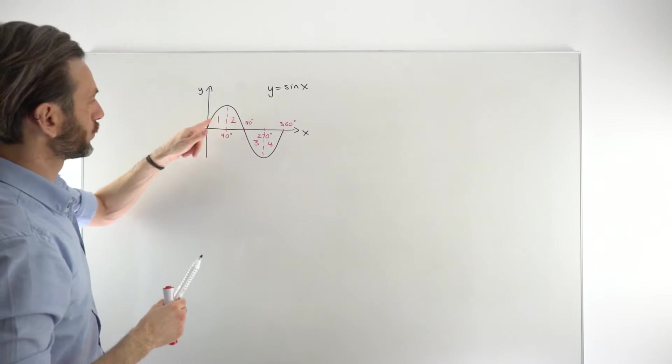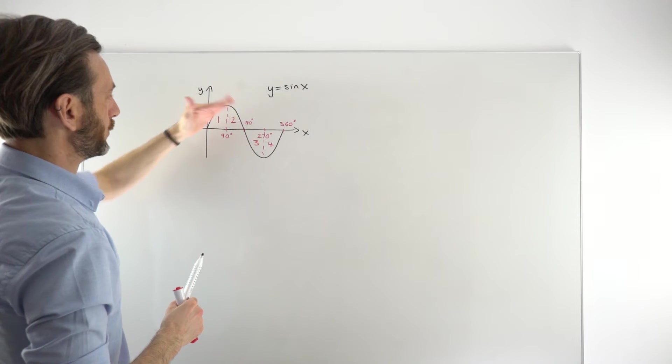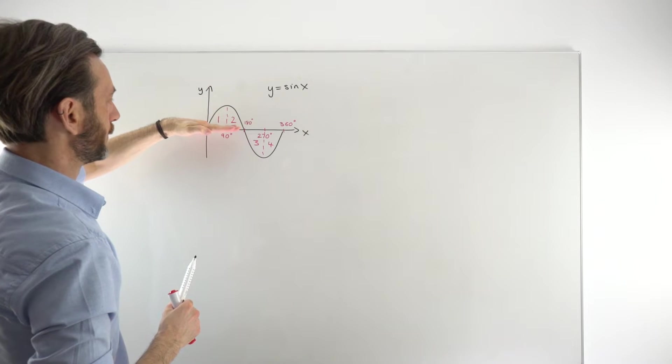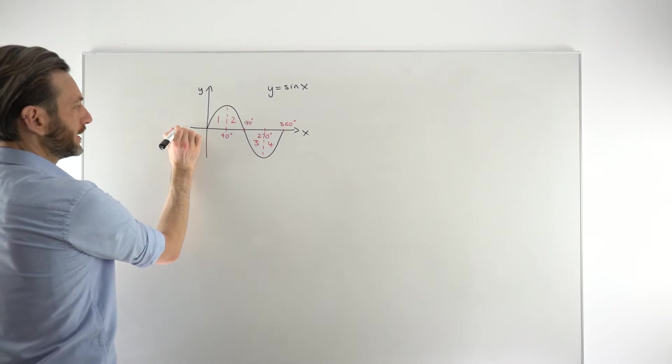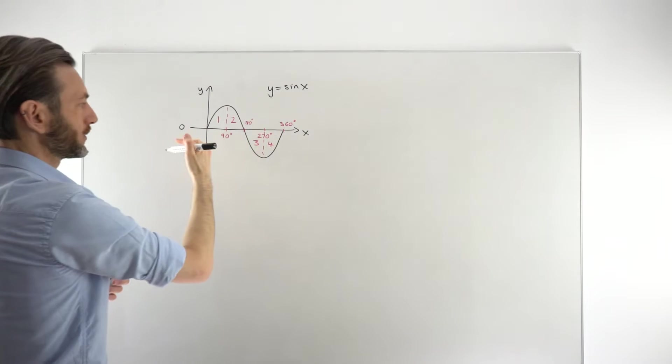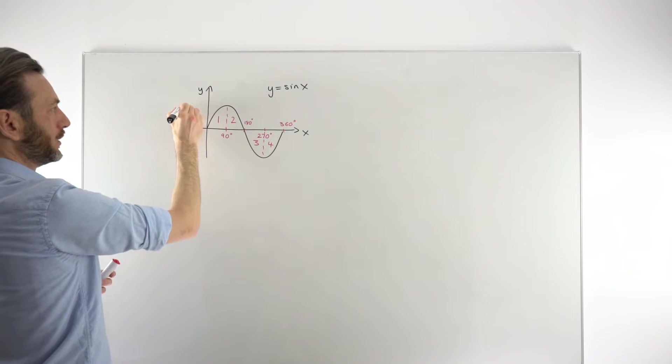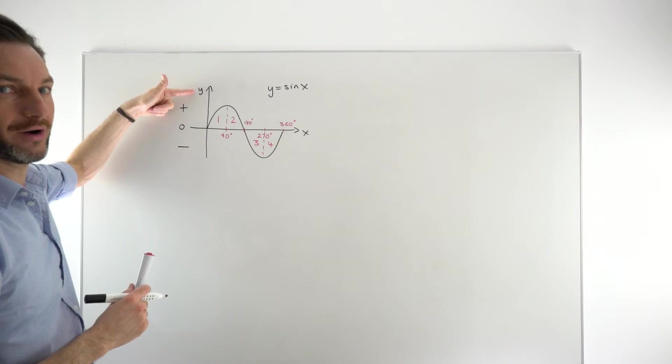Notice that in quadrants 1 and 2, the sine graph is above the x-axis. So we say that in 1 and 2, the value of that function is positive. Basically, we assign a value of 0 to everything along the x-axis. And everything above it we say is positive. Everything below it is negative. So we're just really talking about the y-values there.